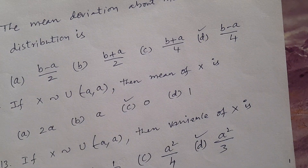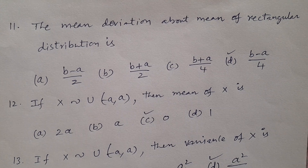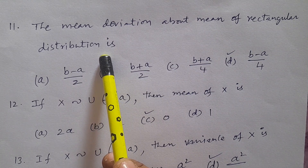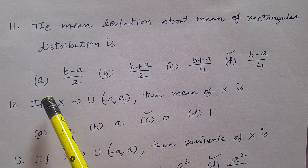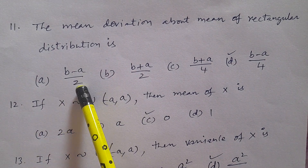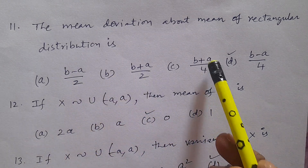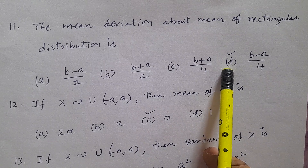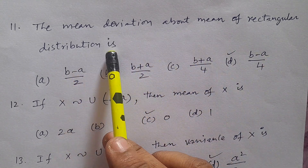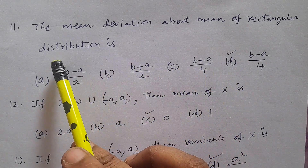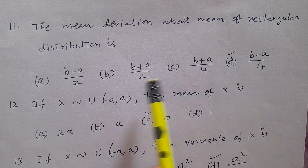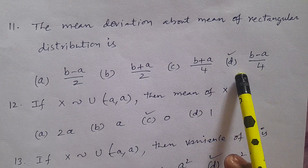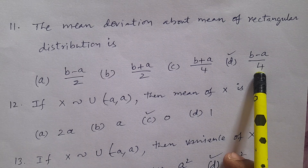Question number 11: The mean deviation about mean of rectangular distribution — options: A. (b-a)/2, B. (b+a)/2, C. (b+a)/4, D. (b-a)/4. The correct answer is D: (b-a)/4. The mean deviation about mean of rectangular distribution is (b-a)/4.